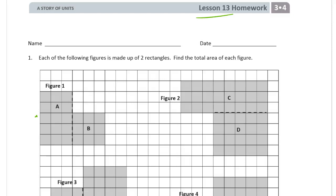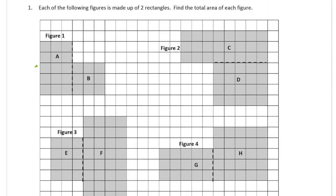This is the homework for lesson 13. It's module 4 of grade 3. Please write your name here first. Each of the following figures is made up of two rectangles. Find the total area of each figure.